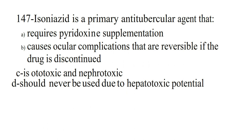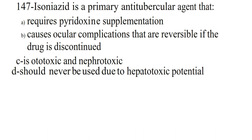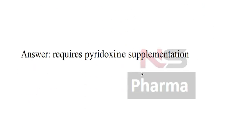Next question. Isoniazid is a primary anti-tubercular agent that: Option A Requires pyridoxine supplementation, Option B Causes ocular complications that are reversible if the drug is discontinued, Option C Is ototoxic and nephrotoxic, Option D Should never be used due to hepatotoxic potential. Answer: Requires pyridoxine supplementation.